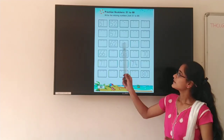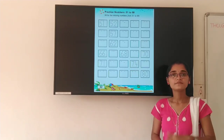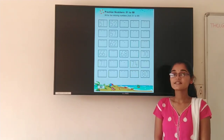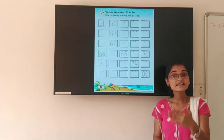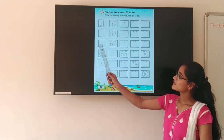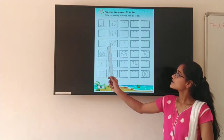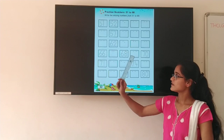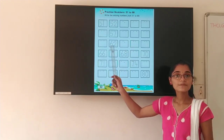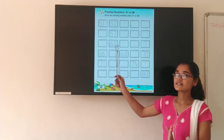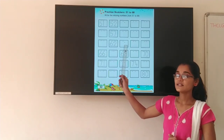Okay? Next. After 60, which number will come? After 60, which number will come? 61, 61. So here you have to write 61. 62 is here. Then after 62, which number will come? 63. So here you have to write 63, 63.